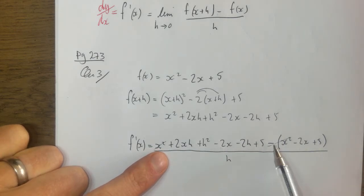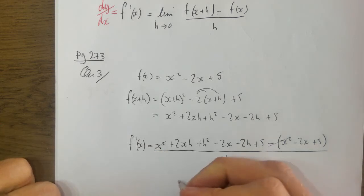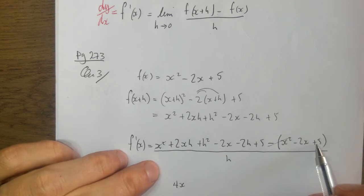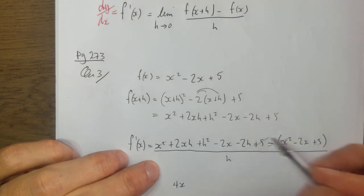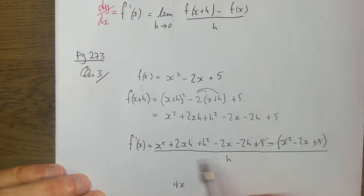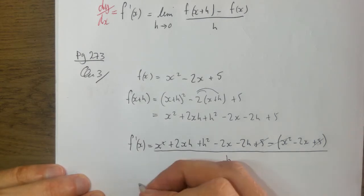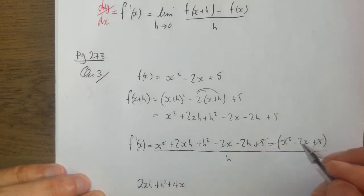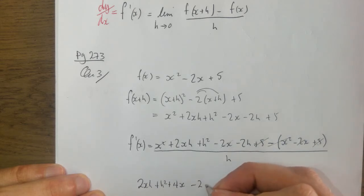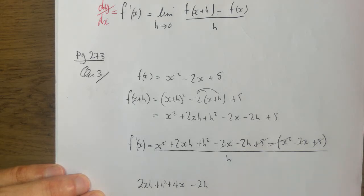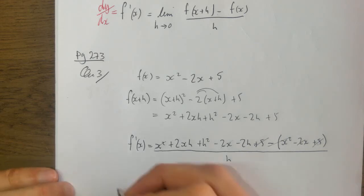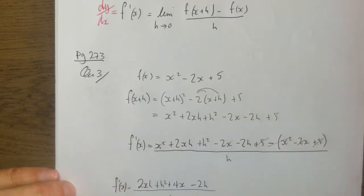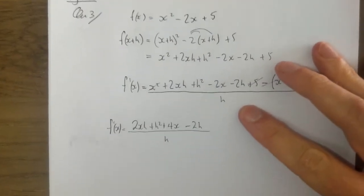Minus two x minus minus two x gives four x. And five minus five, so the numbers cancel out. So looking at what I've got left: two x h, plus h squared, plus four x, minus two h, all over h.